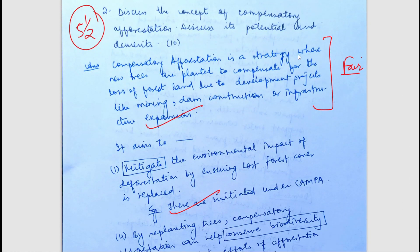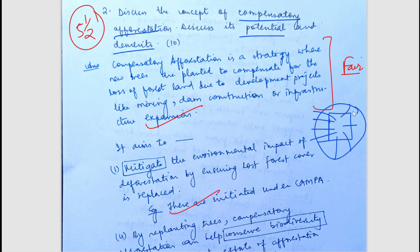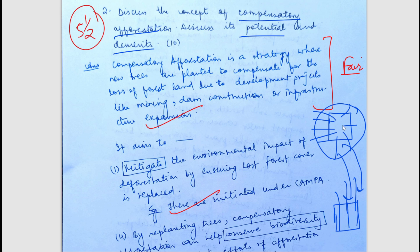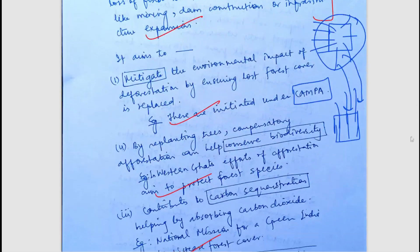The next question is: discuss the concept of compensatory afforestation, its potential, and its demerits. Compensatory afforestation means that when a forest area is felled or cut down for some purpose, afforestation is done in some other place as compensation, so that environmental effects are mitigated. The Forest Conservation Act 1980 highly mentions it, and we have the CAMPA program. The student has also mentioned CAMPA, and the aims include mitigating environmental impact, conserving biodiversity, and carbon sequestration.